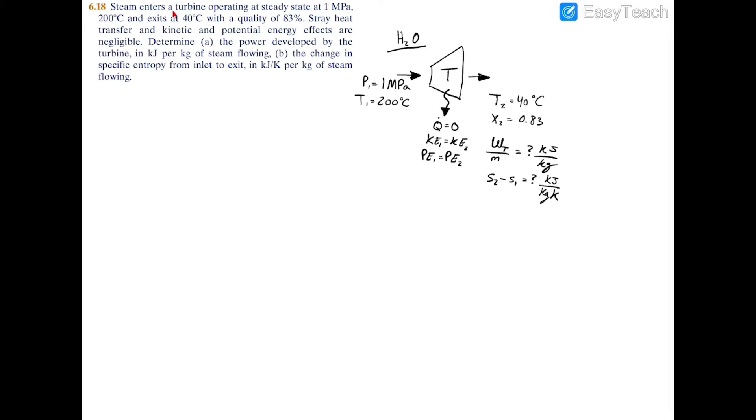In this example, we have steam entering a turbine at steady state with the pressure and temperature at the inlet and the temperature and quality at the exit. We're told that we have no heat transfer, so heat transfer equals zero, and kinetic and potential energy are both conserved so those are also cancelled out.